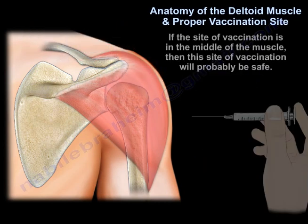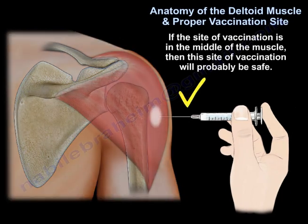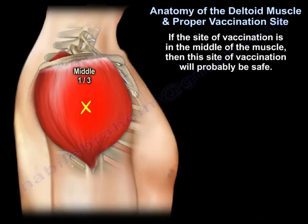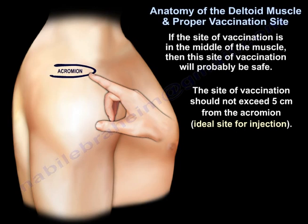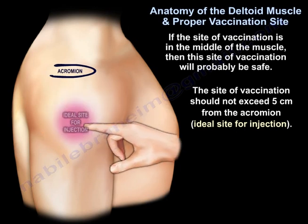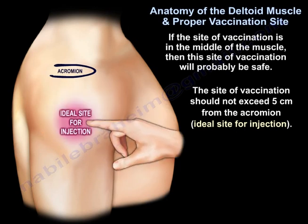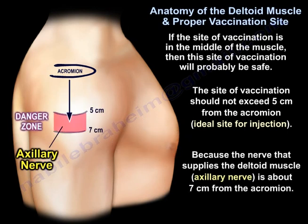If the site of vaccination is in the middle of the muscle, this location will probably be safe. That site should not exceed 5 cm from the acromion, because the axillary nerve, which supplies the muscle, is about 7 cm from the acromion.